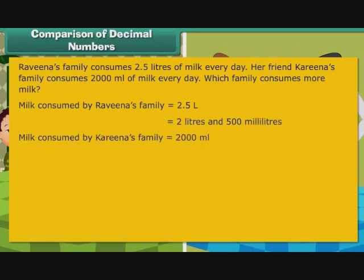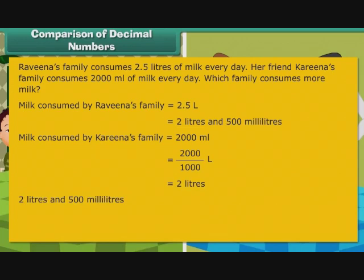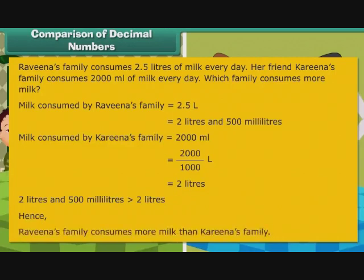Milk consumed by Karan's family is equal to 2000 ml, that is equal to 2000 by 1000 litre, that is equal to 2 litres. Since 2 litres and 500 ml is greater than 2 litres, Ravina's family consumes more milk than Karan's family.